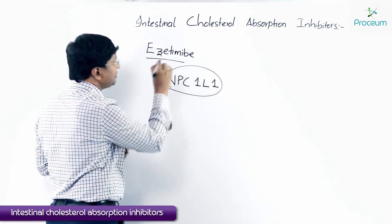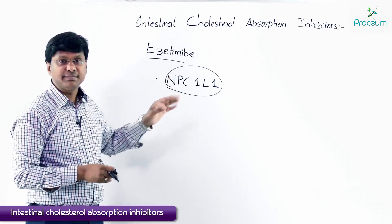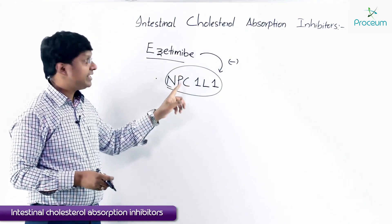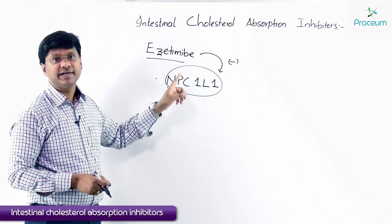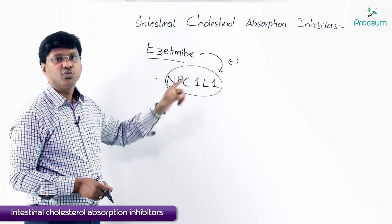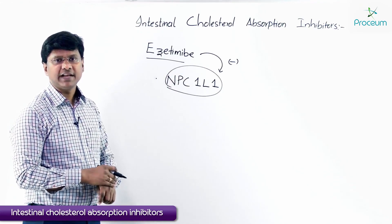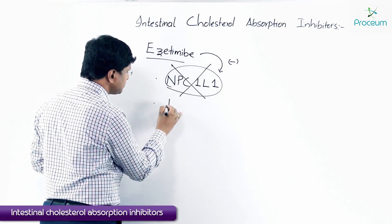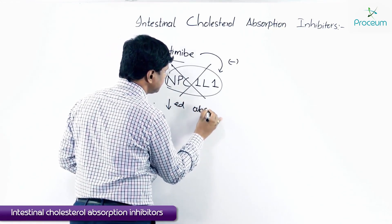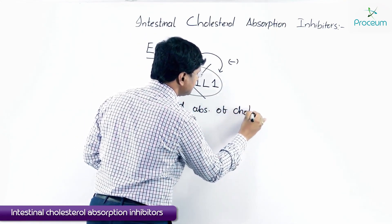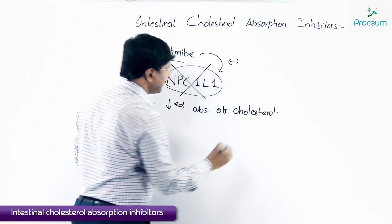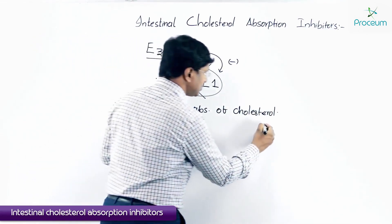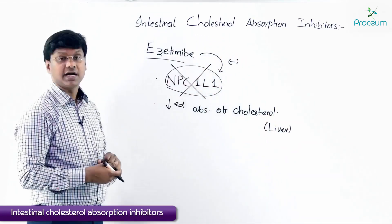What azitimide will do is, azitimide will inhibit this particular transporter — the transporter involved in the intestinal absorption of the cholesterol, that is NPC1L1. Once this particular transporter is inhibited, there is decreased absorption of cholesterol. There will be decreased content of cholesterol in the liver.